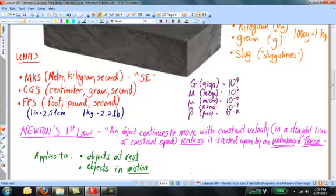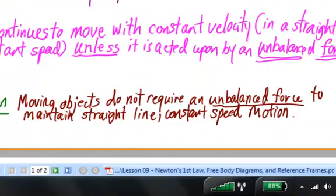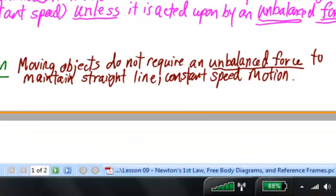Well, it turns out that, in fact, most moving objects in our common experience do feel or experience an unbalanced force in the form of friction, that force that we studied in a previous lesson. What I want you to take away from this is that moving objects do not require unbalanced forces to keep them moving. That's so important that I'm going to write it down, and so should you. Objects don't require an unbalanced force to maintain straight-line constant speed motion.